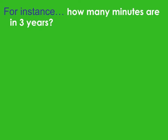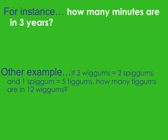For example: how many minutes are in 3 years? You would start with years, cancel out to days, then from days you would go to hours — 24 hours in a day — and then continue from there to get your final number. It's smarter to go from days to hours and then you'll get your answer.